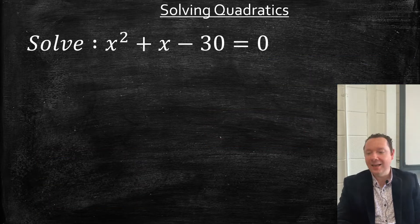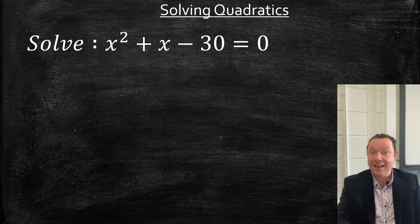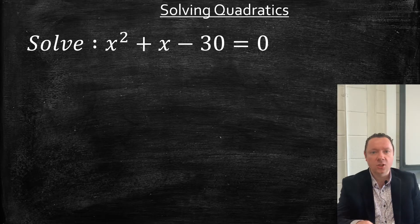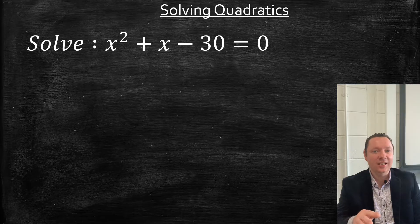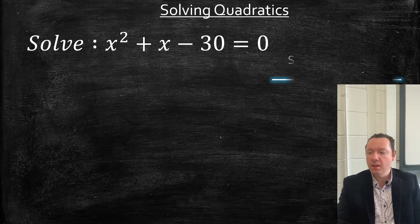The third example is x squared plus x minus 30 equals 0. No common factor, but it can be factorised. You'll know you're using factorisation if this turns up in the non-calculator paper and it doesn't ask you to leave your answer to one decimal place or as a root. If it just says solve it, you're factorising. Give it a go.